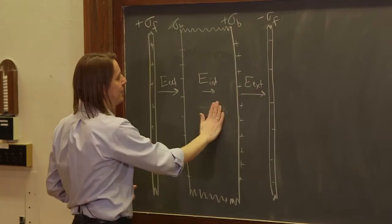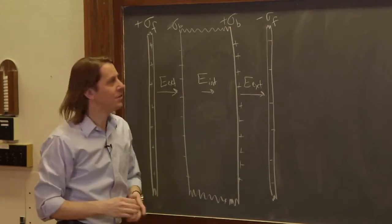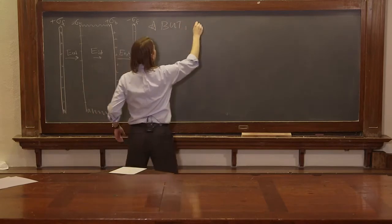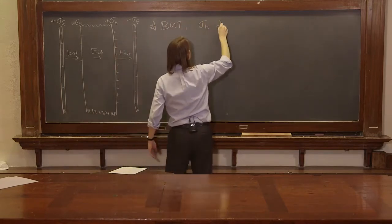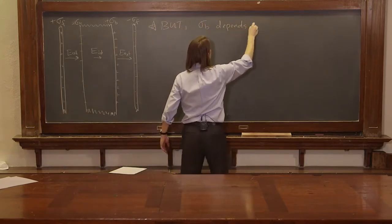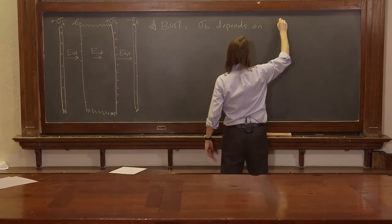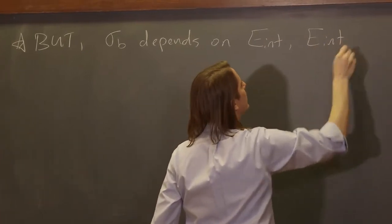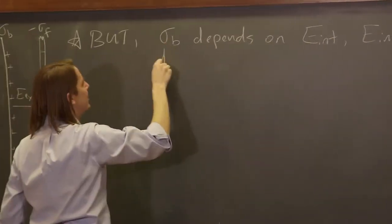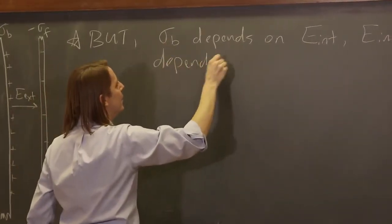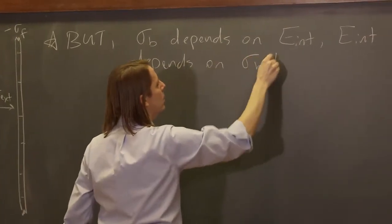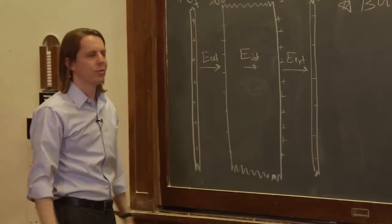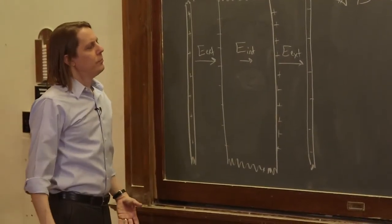All it knows is it has to find a value to reach. So we have a little bit of a problem, but sigma_b depends on E_internal, and E_internal depends on sigma_b. So there's sort of this circular problem. We can't just keep going around in circles.